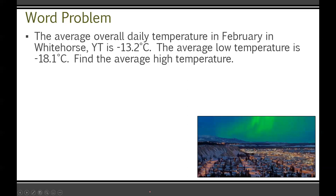Here's a word problem. The average overall daily temperature in February in Whitehorse, Yukon Territory is negative 13.2°C. The average low temperature is negative 18.1°C. We need to find the average high temperature.